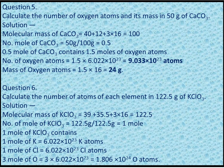Q5: Calculate the number of oxygen atoms and their mass in 50g of CaCO₃. Molar mass of CaCO₃ = 100g. Moles of CaCO₃ = 50 ÷ 100 = 0.5 moles. 0.5 moles CaCO₃ contains 1.5 moles of oxygen atoms. Number of O atoms = 1.5 × 6.022 × 10²³ = 9.033 × 10²³. Mass = 1.5 × 16 = 24 grams.